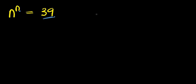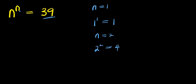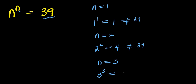For instance, if you consider n equals 1, that means you have 1 raised to the power of 1 and this equals 1. If you also consider n equals 2, you have 2 to the power of 2 and this equals 4, which is not 39. So you proceed to 3 — you have 3 to the power of 3, which is 27, and that is not 39 either.